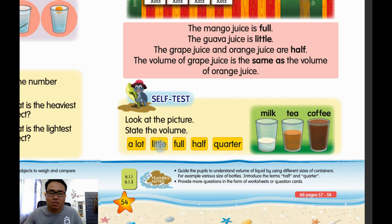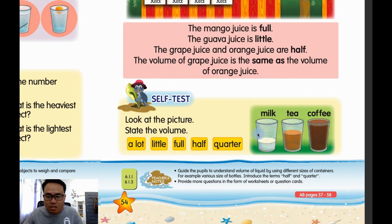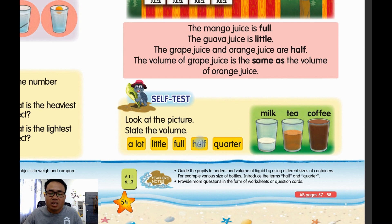Milk is a quarter. Why quarter? Quarter means one part out of four parts — one, two, three, four. So we say this is quarter. What about tea? Tea is half — look at this, tea is half.